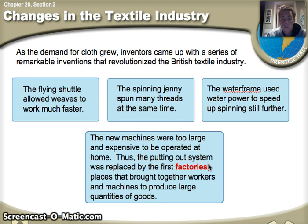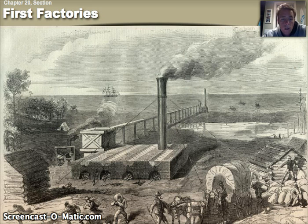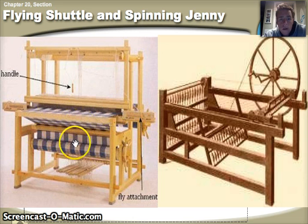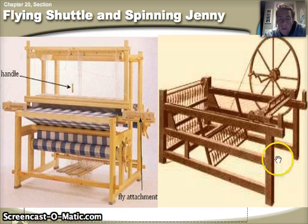Factories are places that bring several workers together with machines to produce large quantities of goods at once. Here we can see a picture of some of the first factories in Great Britain. Inside these factories, we see inventions such as the flying shuttle and the spinning jenny, which allows several wheels of thread to be used at once.